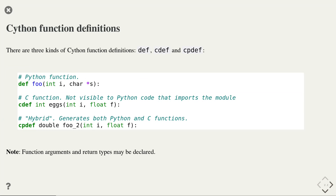The second important extension to Cython concerns function definitions. Remember, in Python we always define functions with a def keyword. In Cython, we have three keywords to define functions: def, cdef, and cpdef. The def keyword in Cython behaves just like the def keyword in Python — it generates a Python function that can be used as usual. If you want to define a function in C, you have to use the cdef statement. Functions defined by cdef can either take Python objects or C values as parameters and can either return Python objects or C values.